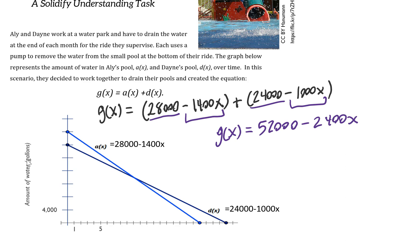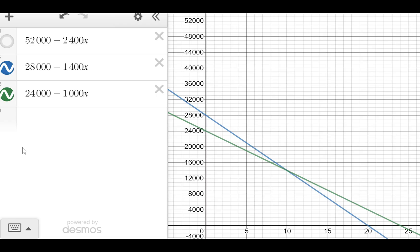By working together, they can drain the 52,000 total gallons at a rate of 2,400 gallons per minute. We want to generate a graph of G(x) on new axes, so here I have a scale that's going to accommodate the size of this new graph. You can see if Dane's pool had 24,000 and Ally's pool had 28,000, then together the total gallons they needed to drain was 52,000.